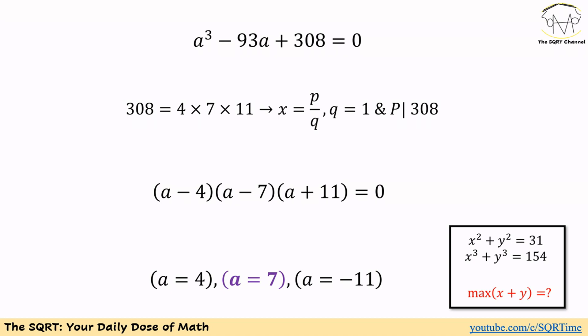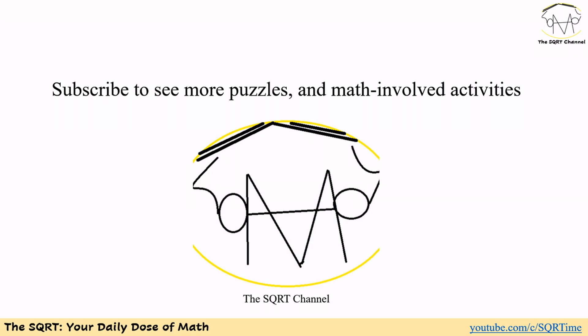The question asks us to find the maximum value that we can have for x plus y, and remember we used a for x plus y. The max value that we found is 7 and that's our final answer. Thanks for watching the video. If you would like to see more positive math-involved activities, please subscribe to the channel. This is the SQRT channel.